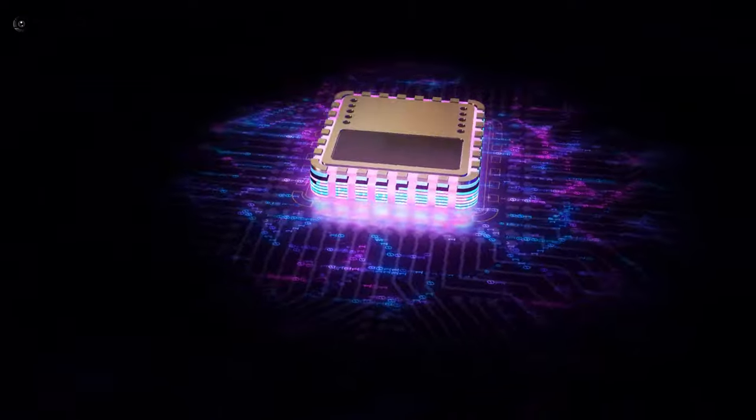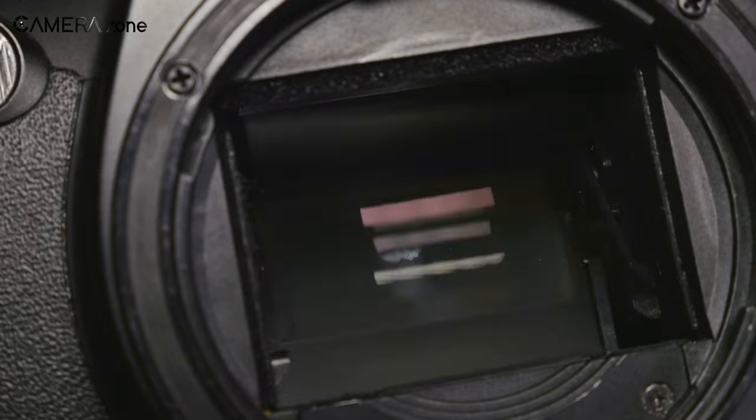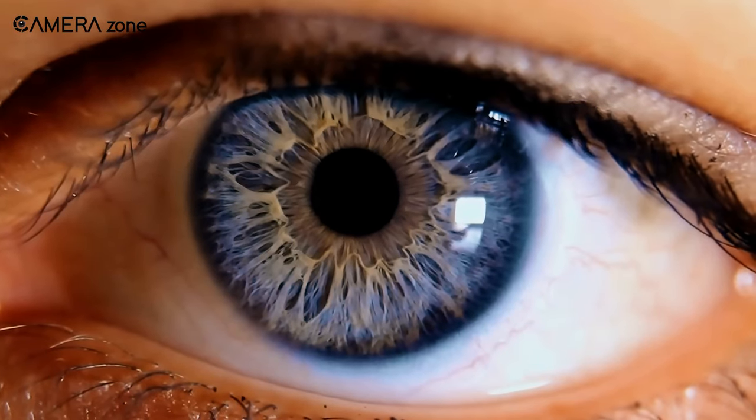The image processors mimic the functionality of our biological eye for capturing what stands in front of it. So to understand how a sensor works, we first understand how our eye works.